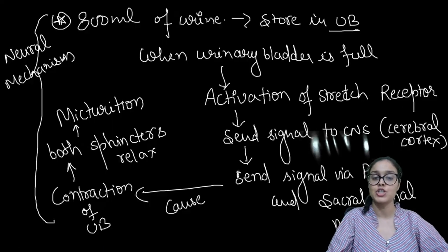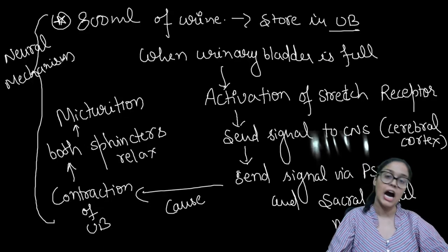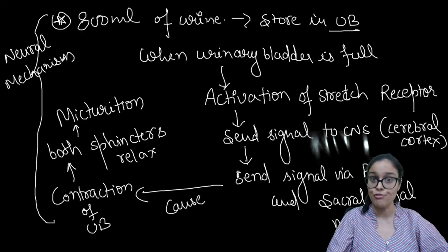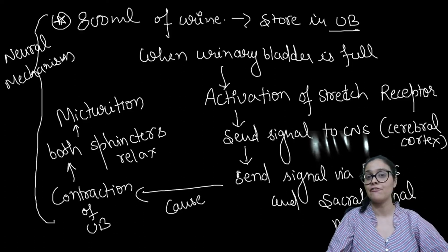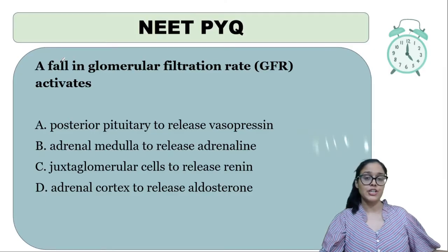You have to remember what nerves are involved and this whole step. This full process of micturition is under the control of the neural mechanism — neural mechanism causing micturition reflex, as simple as that. No hormonal control. They have asked this question in NEET: is micturition under control of hormone or neural? Remember, it is neural control. Micturition is done.